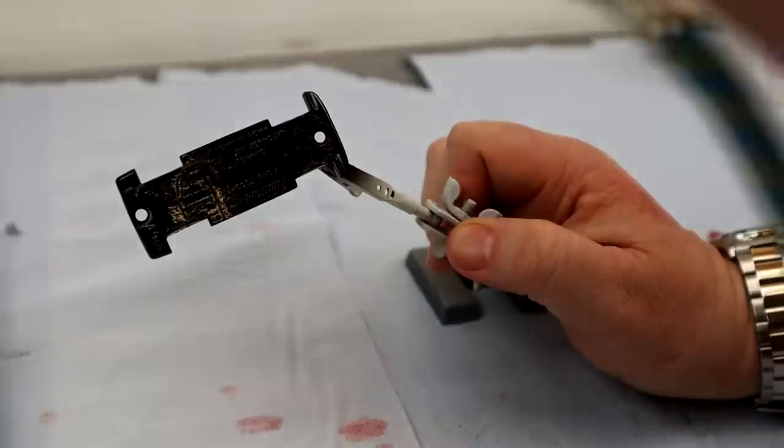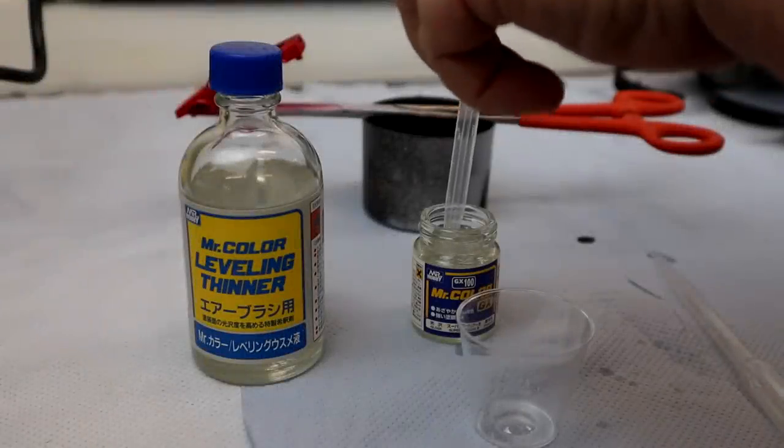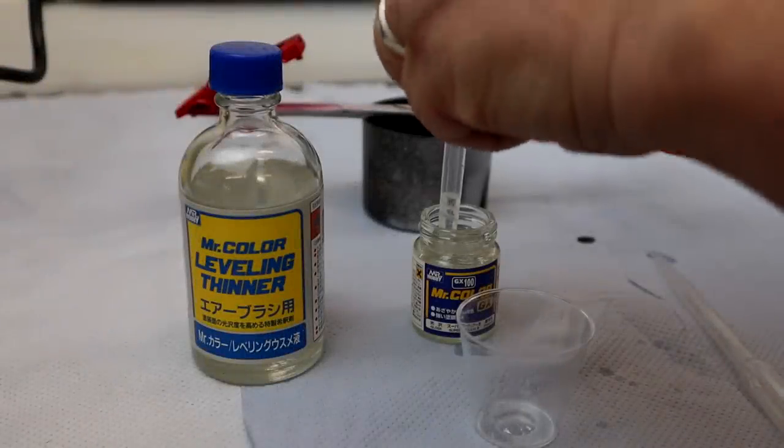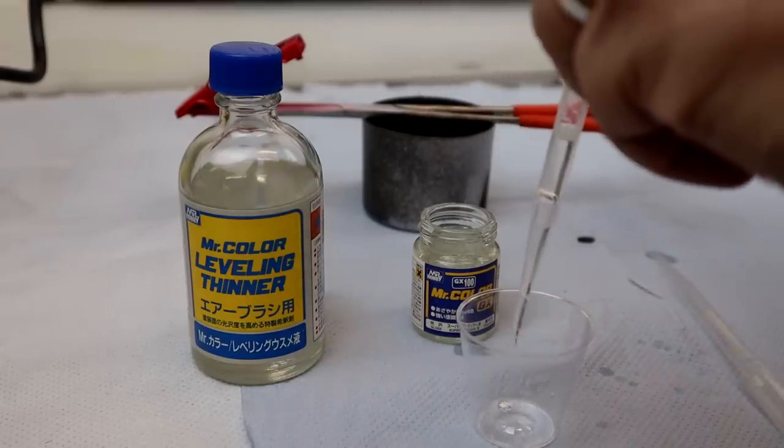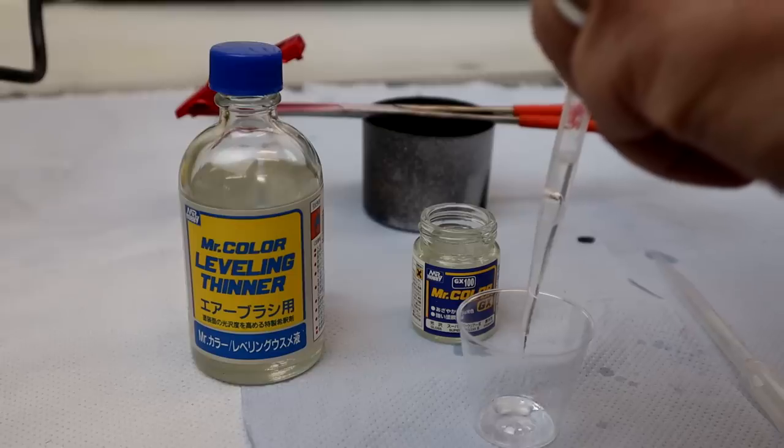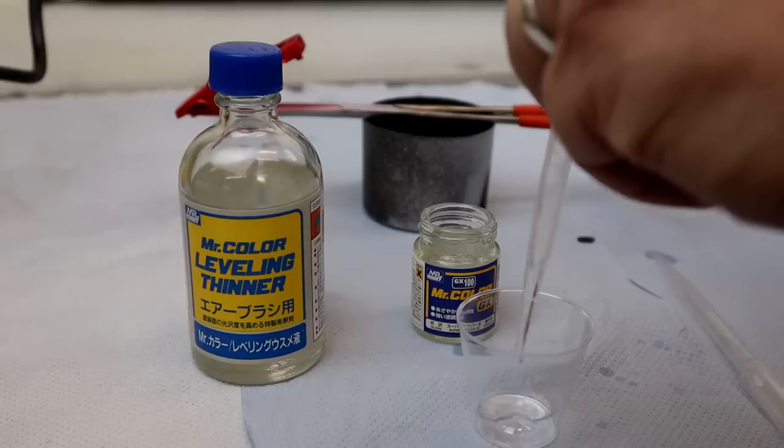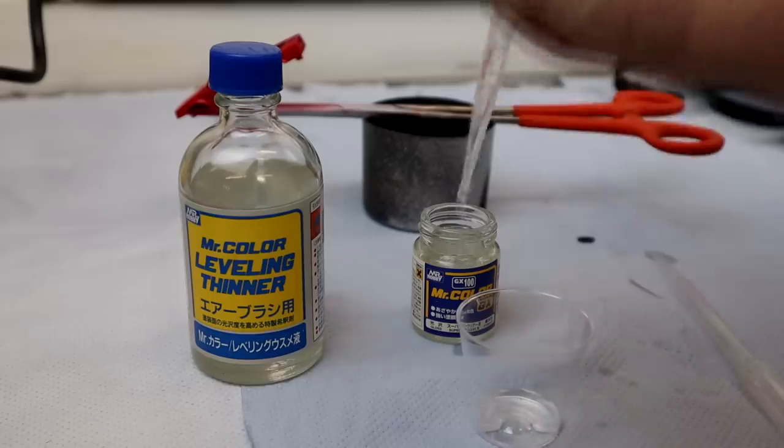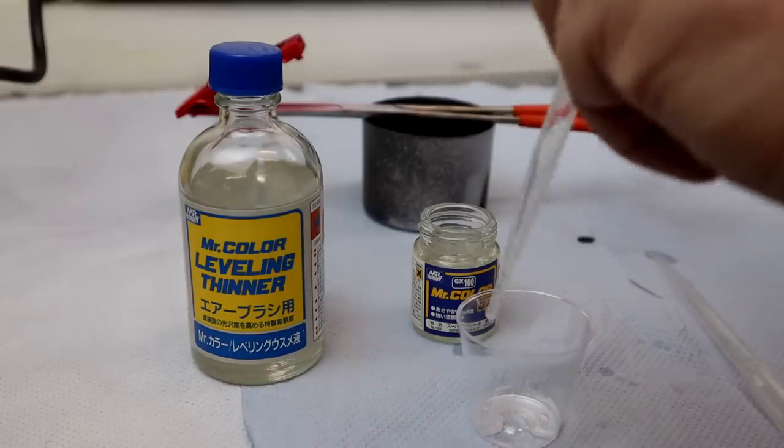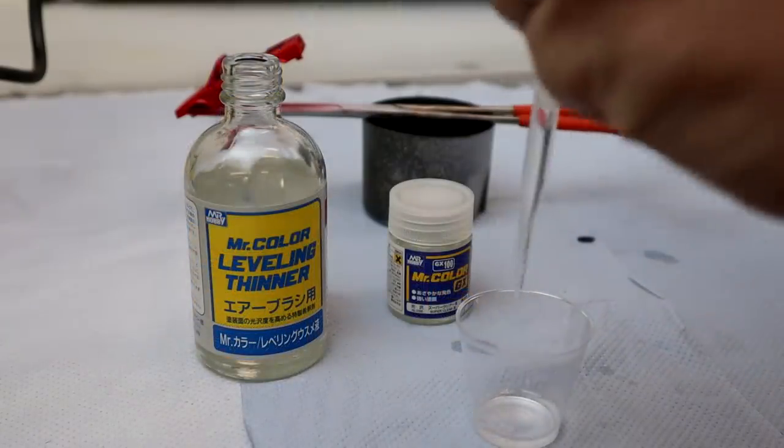And one thing I always do with my models is actually apply a lacquer. I use the Mr. Color lacquer again with the Mr. Color leveling thinner. Again, a one-to-one ratio. And what we'll be doing is spraying over the red. I like to protect the acrylics, the solvent acrylics these are.